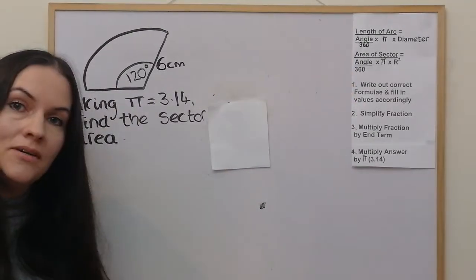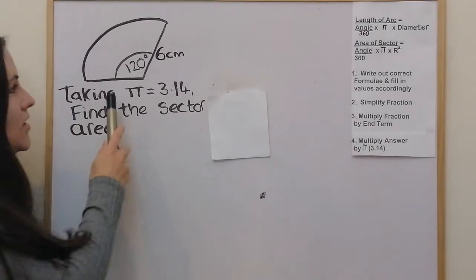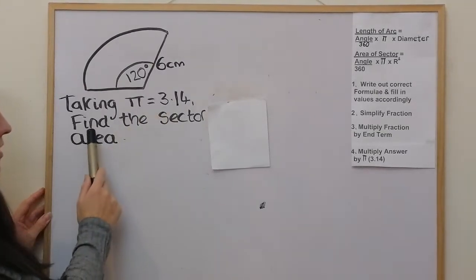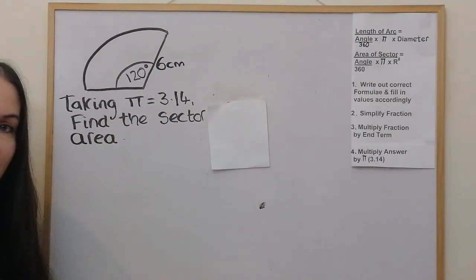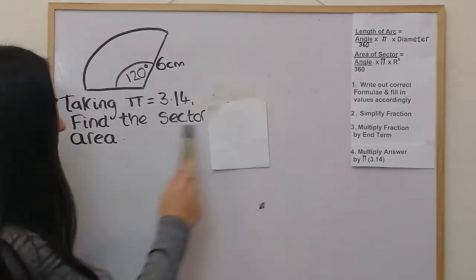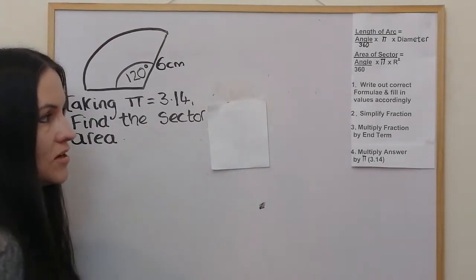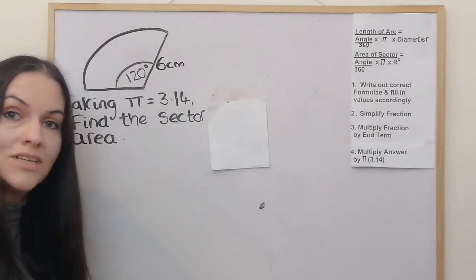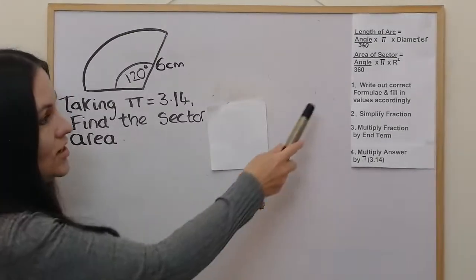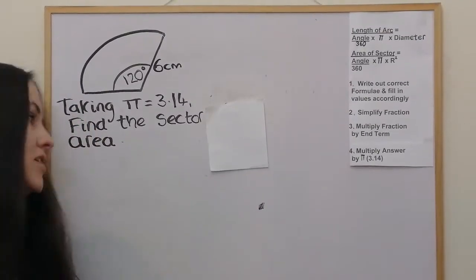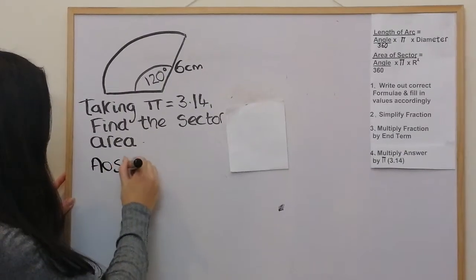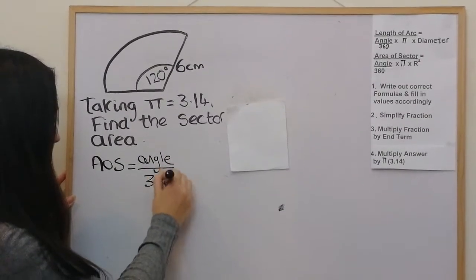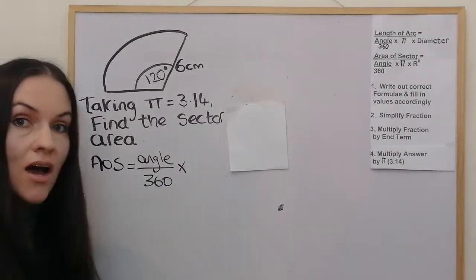I'm going to use an example here. We're given this diagram and we're asked, taking pi as 3.14, to find the sector area. The first thing we need to do is write out the correct formula and fill in the values accordingly — the same way as if you were working out a calculator version. So the correct formula is: area of sector = angle over 360 times pi times R squared.